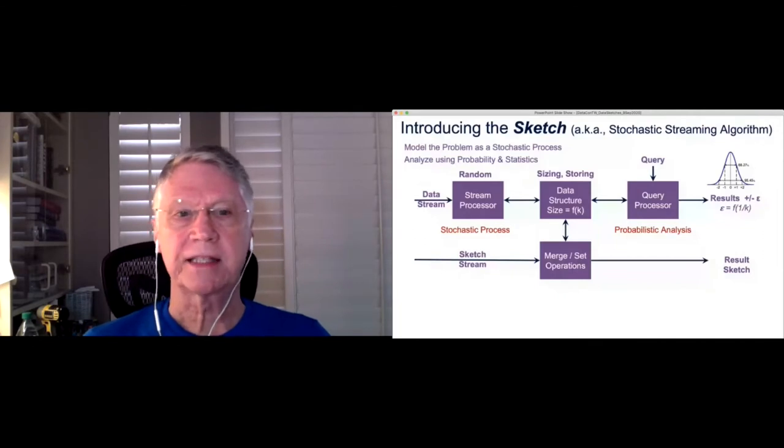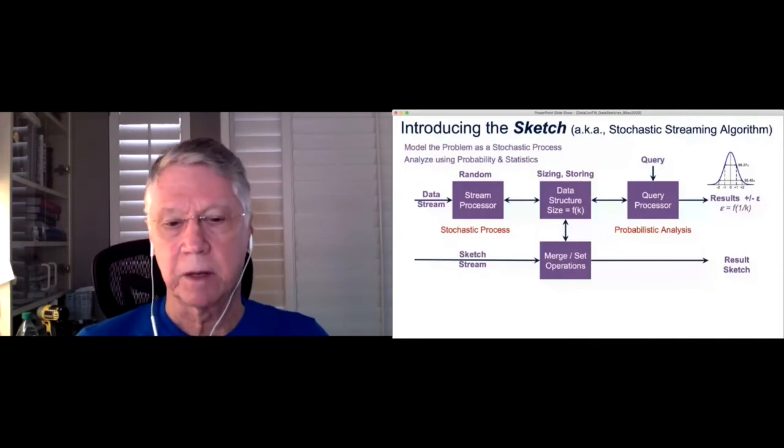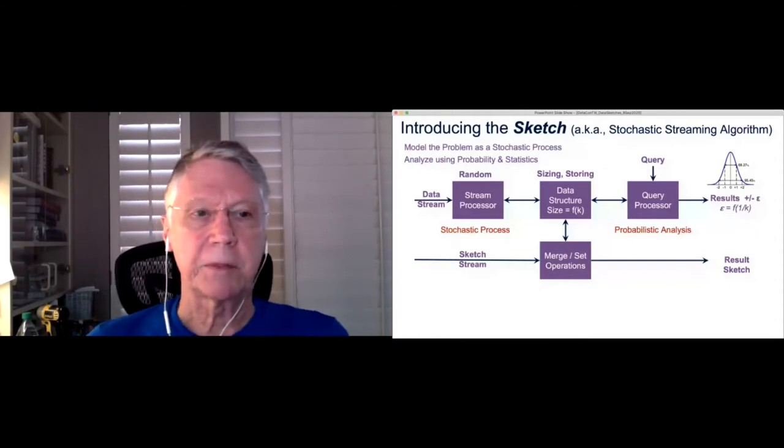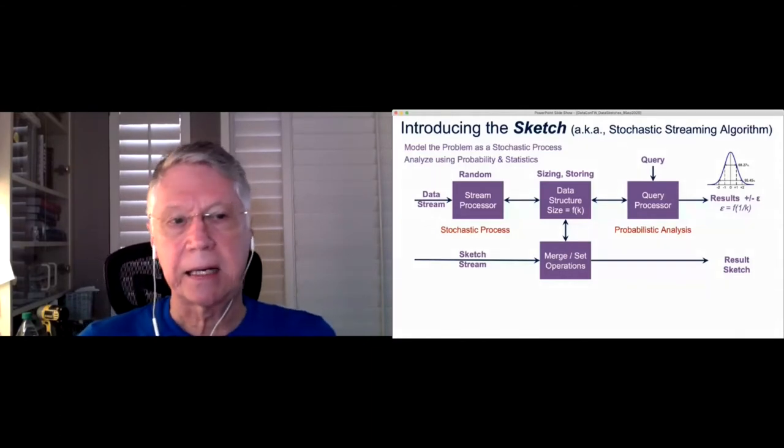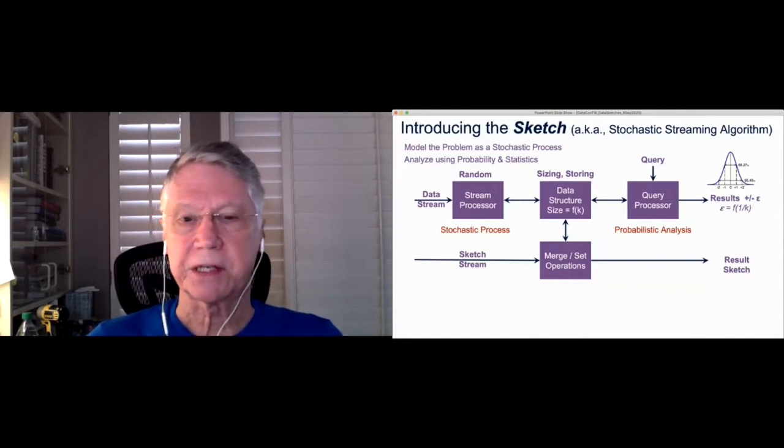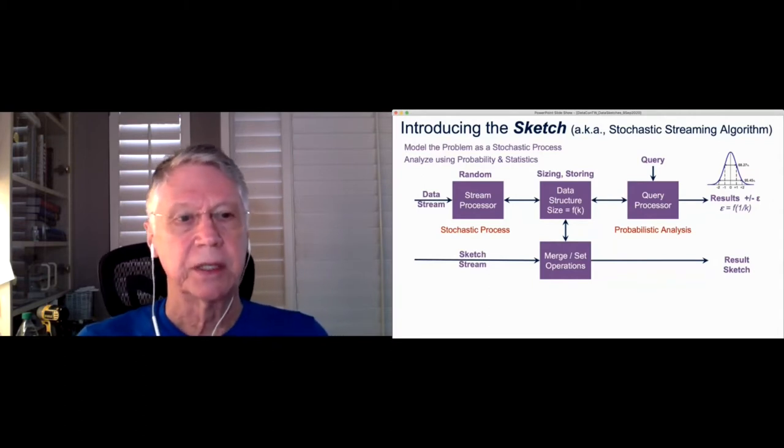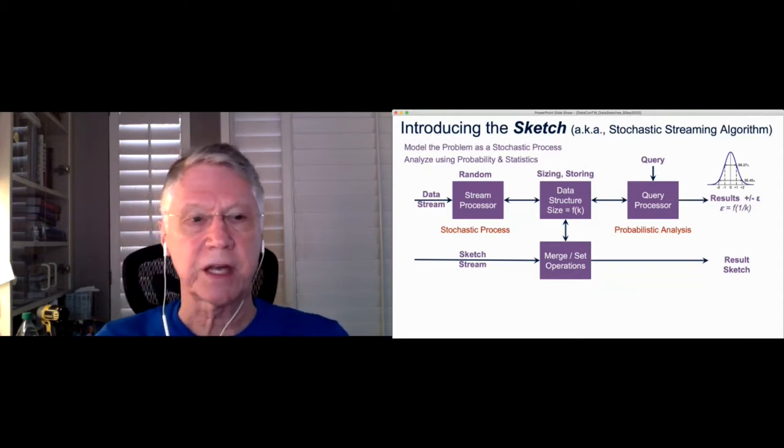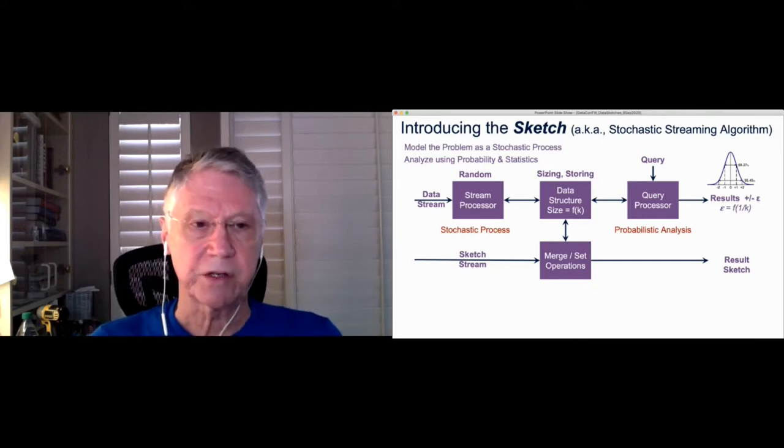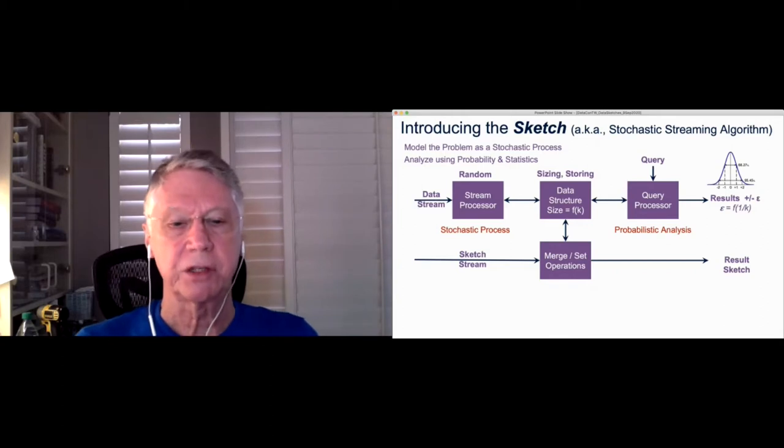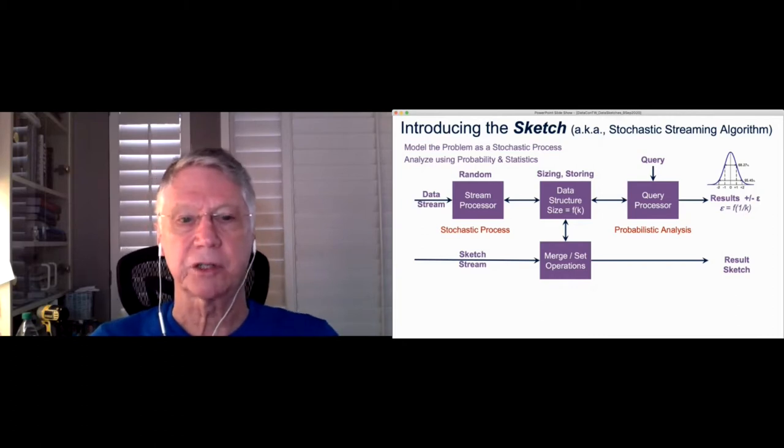So I want to introduce the concept of a sketch. It's the common name for a set of technologies known as stochastic streaming algorithms. And we model the problem as a stochastic process and analyze using probability and statistics. And these sketches have roughly four major components to them. It has a stream processor at the front end that takes the stream of items coming in. Those could be a live stream or it could be off of a disk or whatever. And it uses stochastic and random processes in the selection or examination of that stream. And in that process, then it keeps some elements or aspects of the data in a data structure. It's a very specialized data structure.